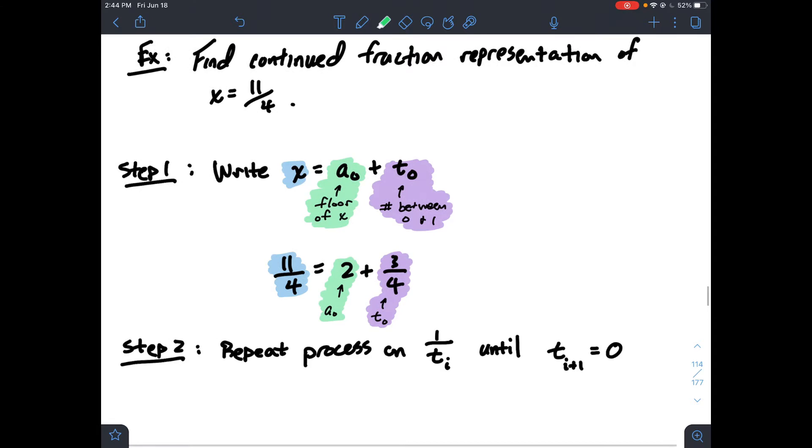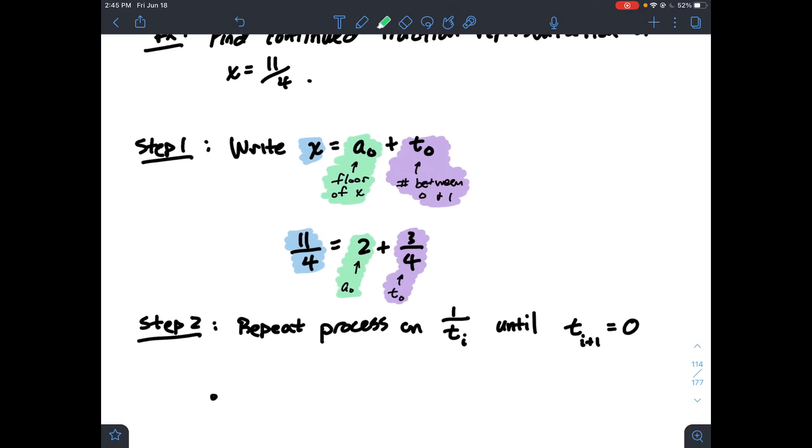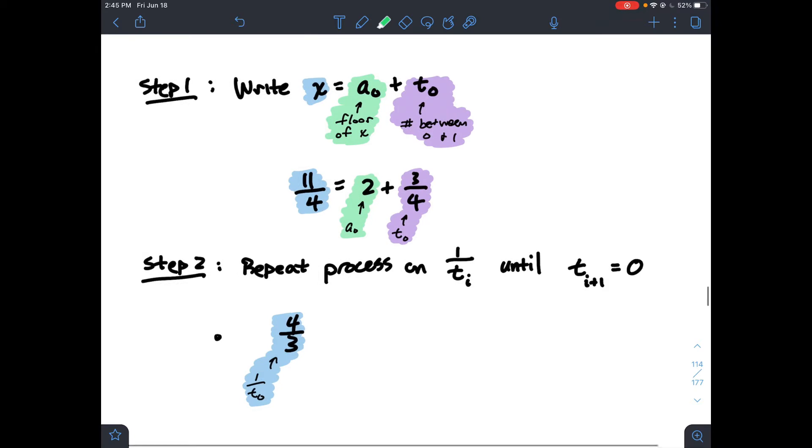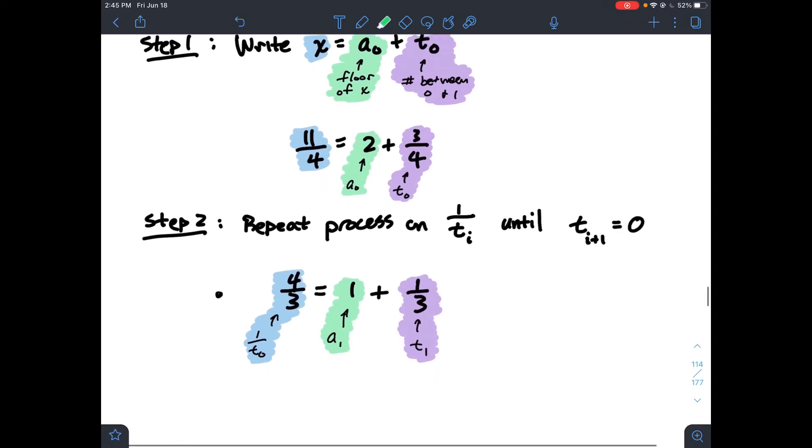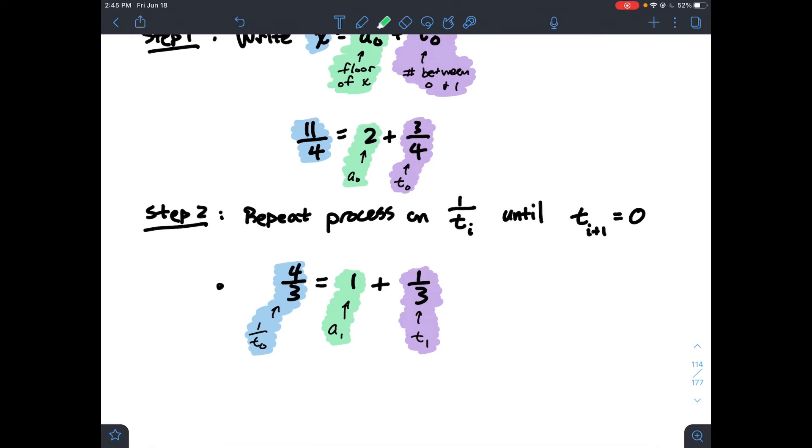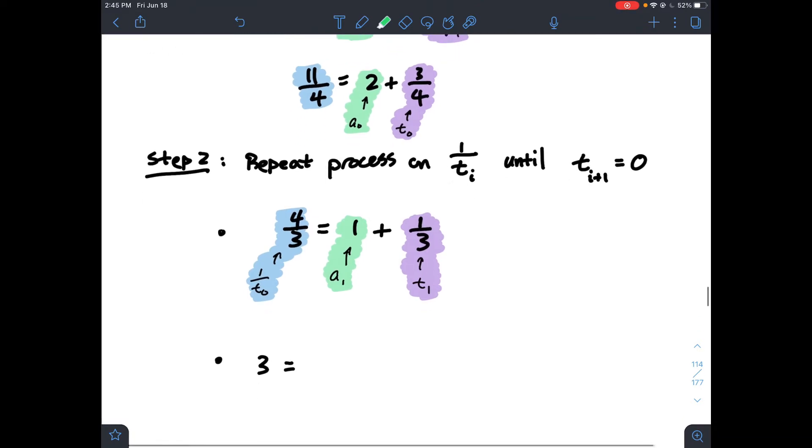Now in step two, we're just going to repeat this process on 1 over ti until ti plus 1 is equal to 0. That's what I mean by if this process terminates. So 1 over t0, t0 is 3 fourths. We're going to take its reciprocal, 4 thirds. We're going to rewrite it as a1 plus t1. I take the floor of that, which is 1, plus what's left, a third. So that's my t1. Since that 1 third is non-zero, I repeat this process. I flip it, and it becomes 3. I take the floor of that, which is 3, plus 0. So t2 is 0, that is when I stop.